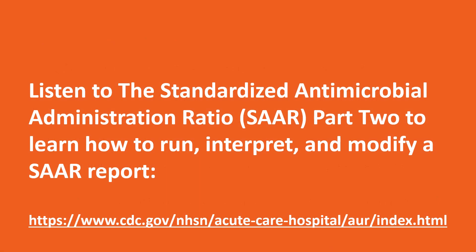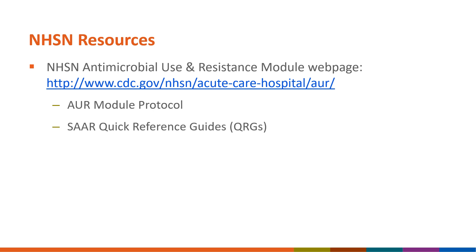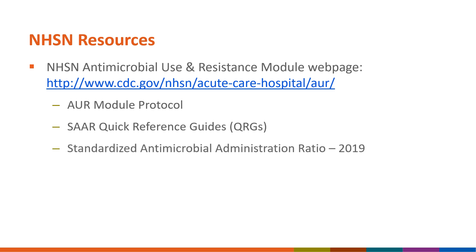Now that you understand the SAR in greater detail, the next objective is to learn how to generate a SAR report within NHSN. For more information on how to run, interpret, and modify SAR reports within the NHSN application, listen to Part 2 of this Quick Learn series at the webpage provided. This slide provides some additional NHSN resources. On the NHSN Antimicrobial Use and Resistance module webpage, you can access the AUR module protocol for detailed information on reporting, the SAR Quick Reference Guides or QRGs, and other training webinars.